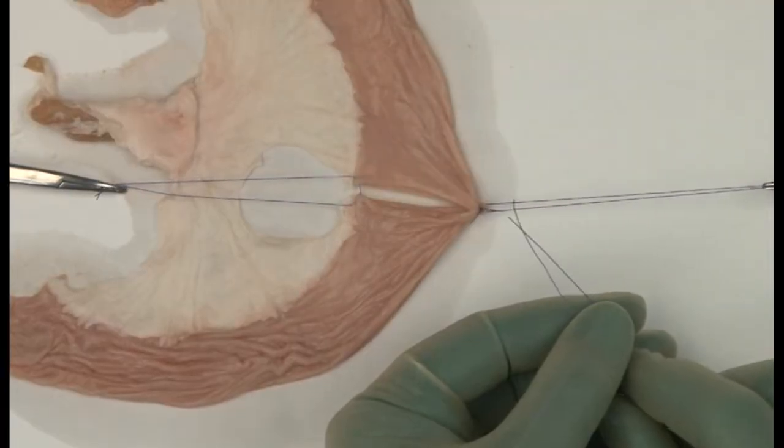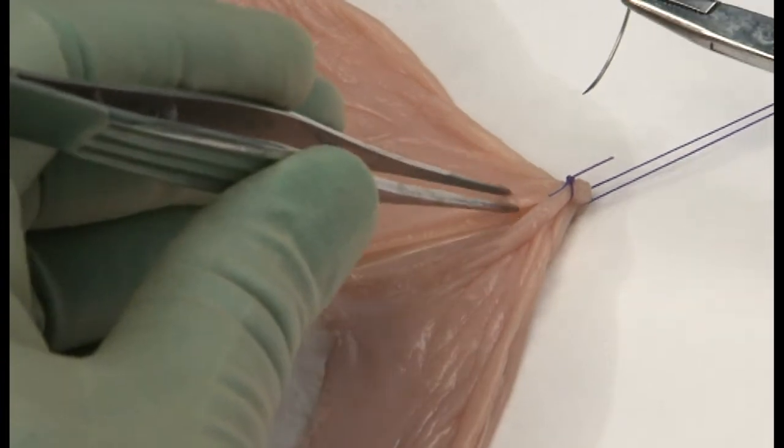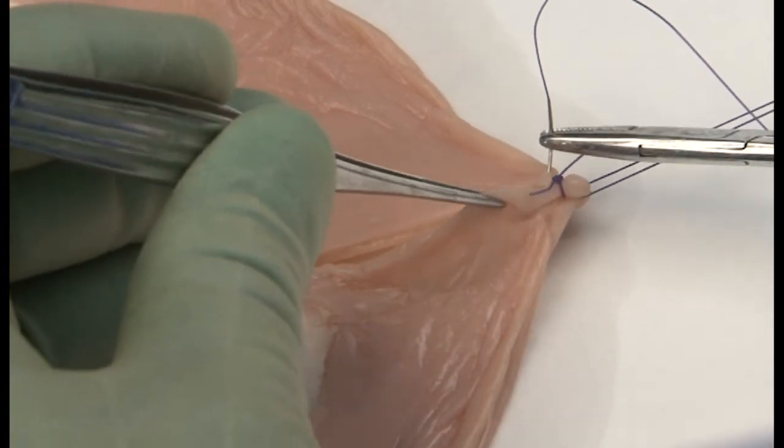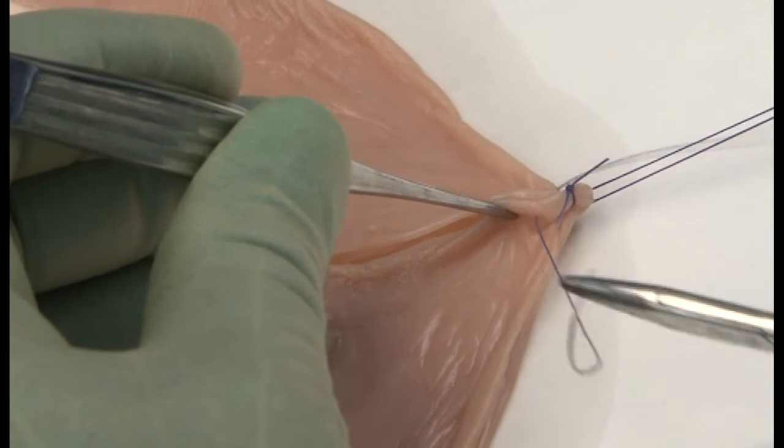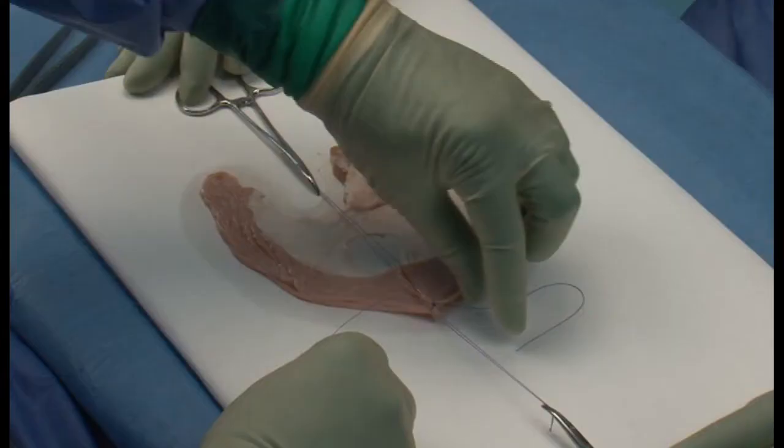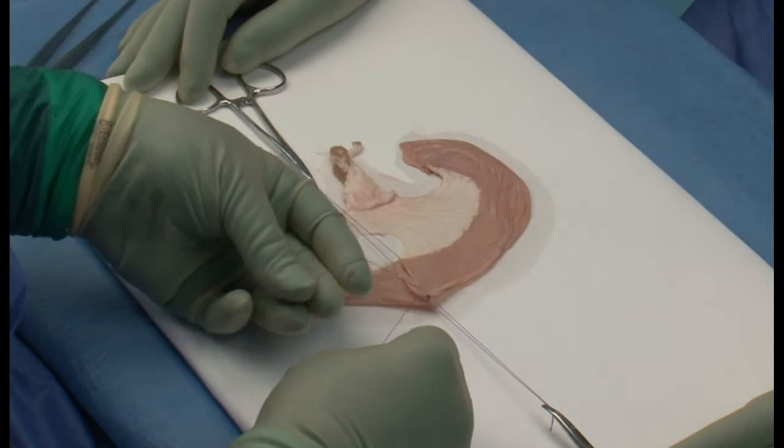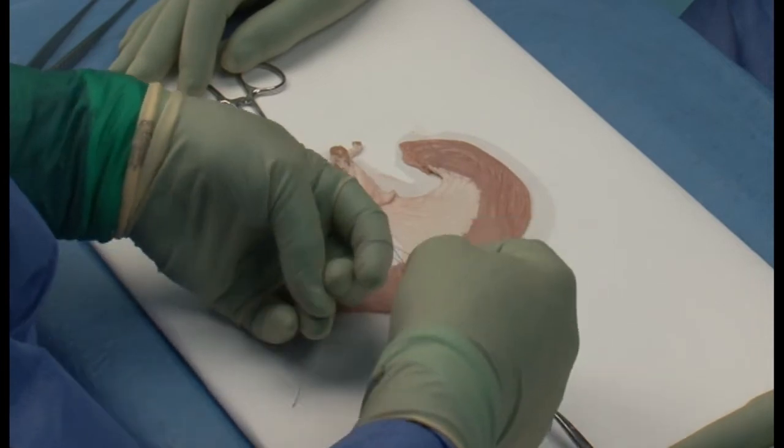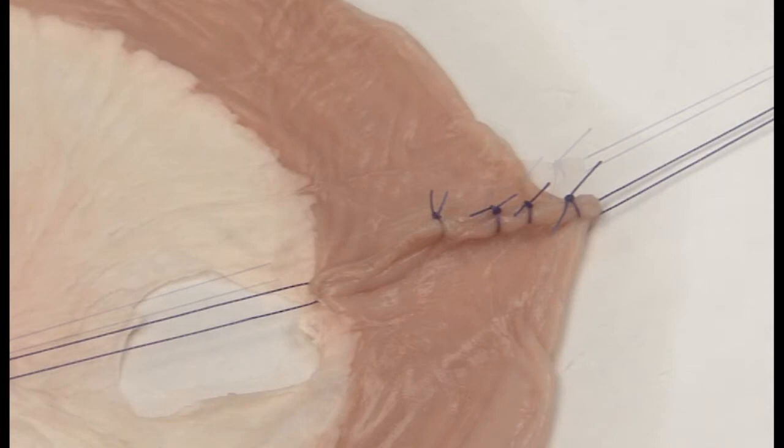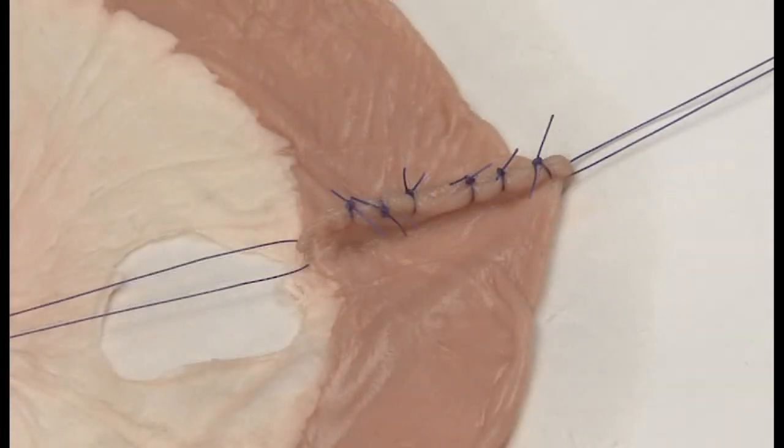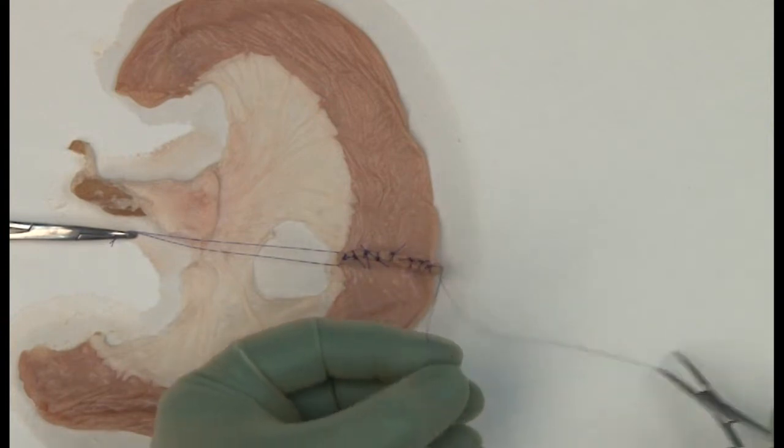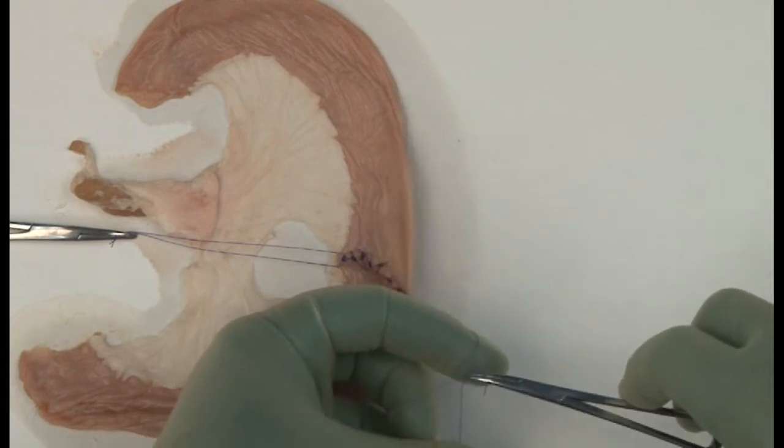Cut the ends about 4 mm long. Work across the entire anterior wall at 5 mm gaps. But do not cut them. Replace them in the hemostats.